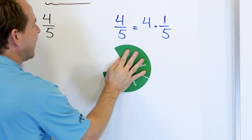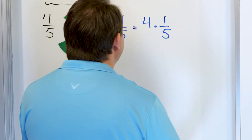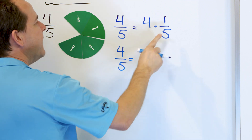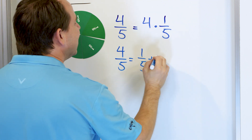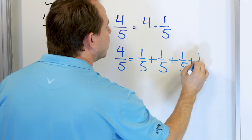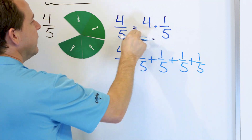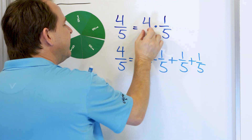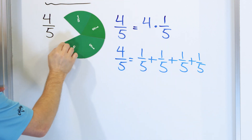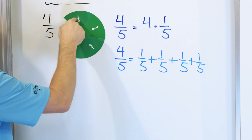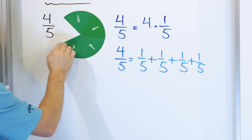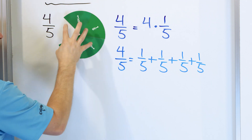We can also write it in terms of addition. 4/5ths equals 1/5th plus 1/5th plus 1/5th plus 1/5th — 4 times. Because multiplication is the same thing as adding the thing that many times. So 4/5ths can be thought of as 1/5th plus 1/5th plus 1/5th plus 1/5th, or as 1/5th times 4. Same thing.